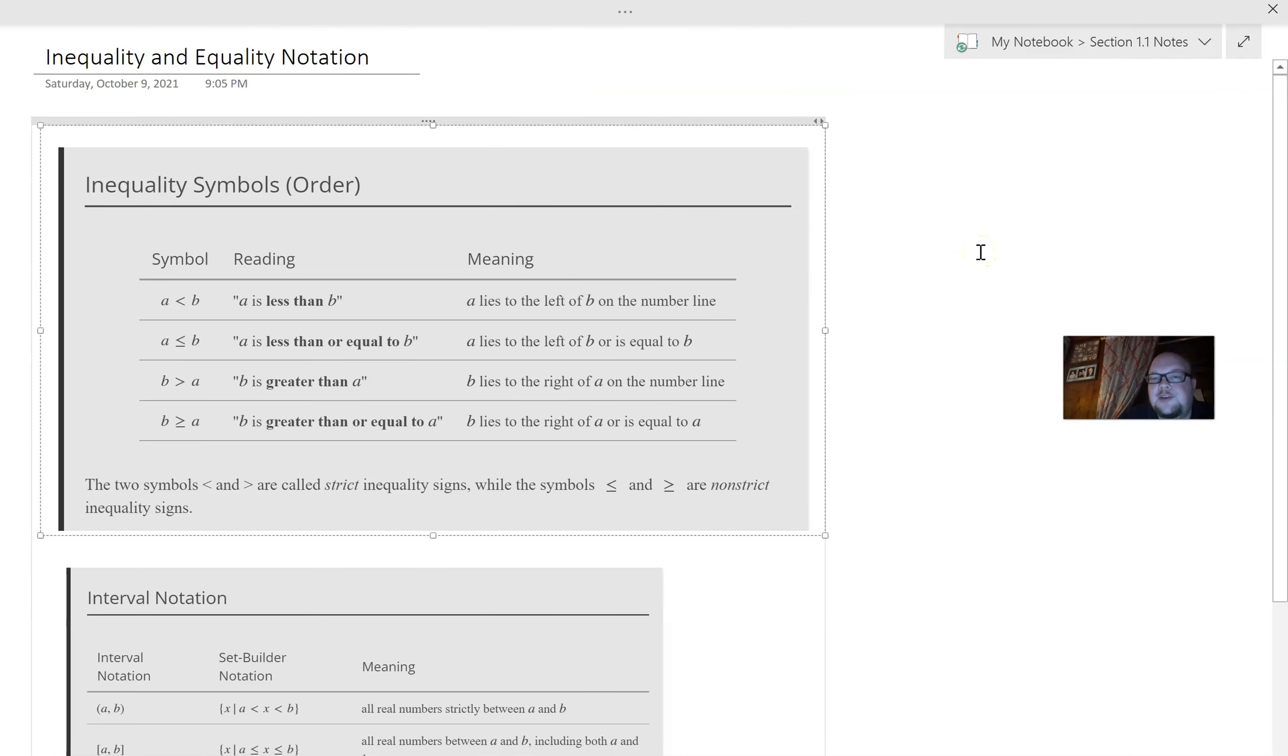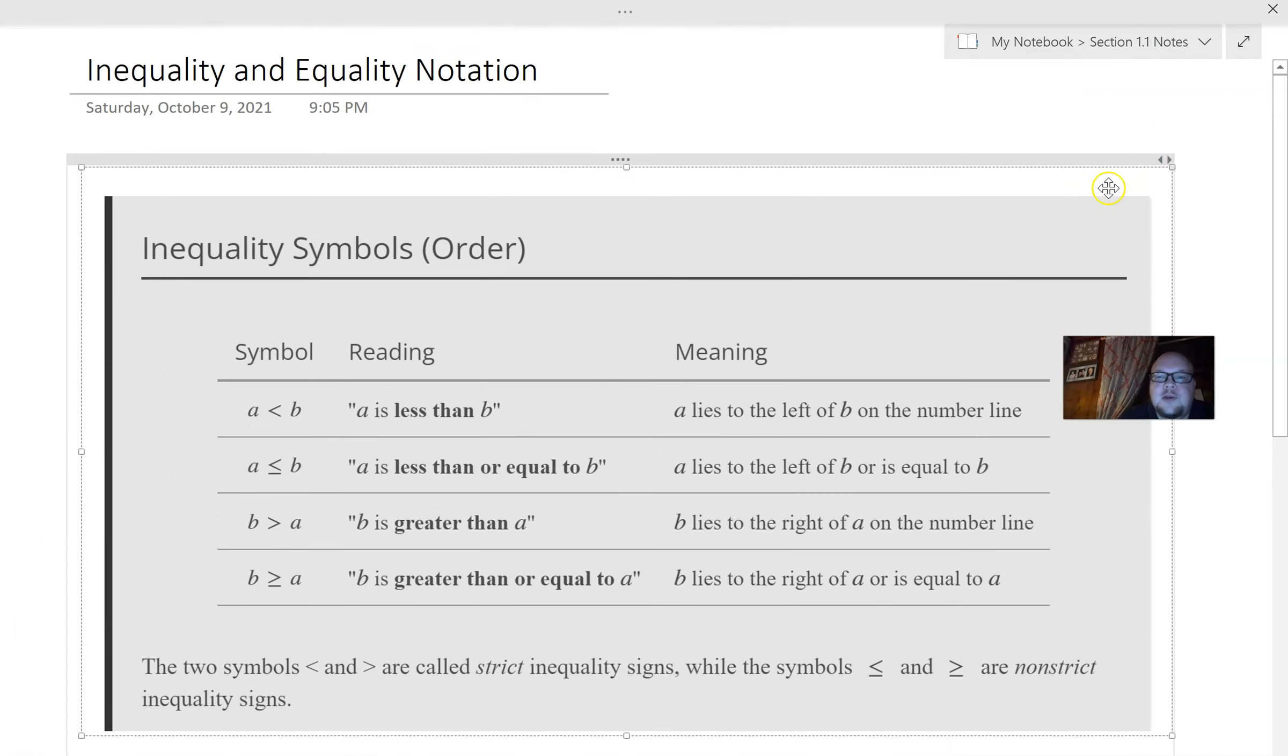All right. Inequality notation. So remember with here, whichever way the arrow part of your inequality points, that points to the smaller, whereas the open part, the mouth is the bigger. So here, this is A is strictly less than B. Whereas if we put the little equal to, that means A is either less than or it equals B. And then we can flip it around.